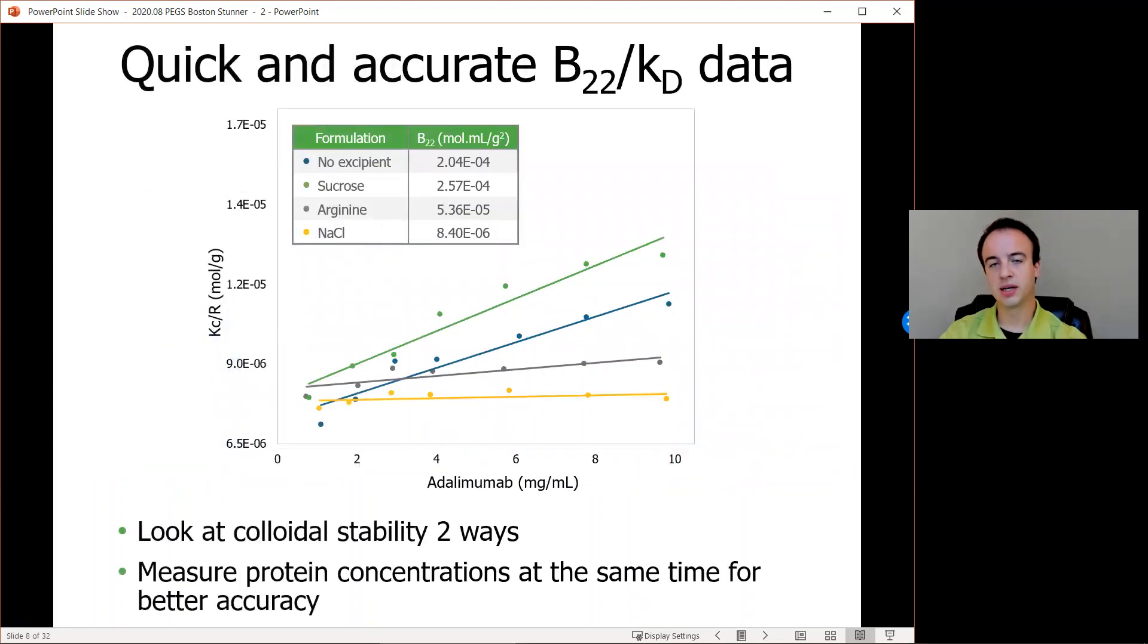Another application of this DLS data is in quantifying B22 and KD data. This has to do with protein-protein interaction and is a quick measurement of colloidal stability using light scattering data. B22 is the second virial coefficient and KD is the diffusion interaction parameter. Stunner will measure the protein concentrations across a series of concentrations from about one to ten milligrams per milliliter. At the same time, we'll take light scattering data, either intensity for B22 measurements or diffusion coefficient for KD measurements.